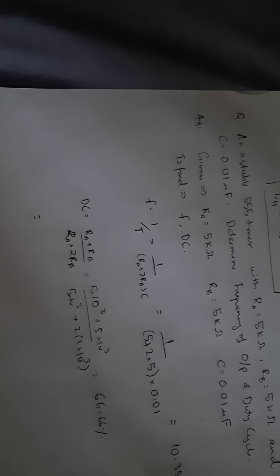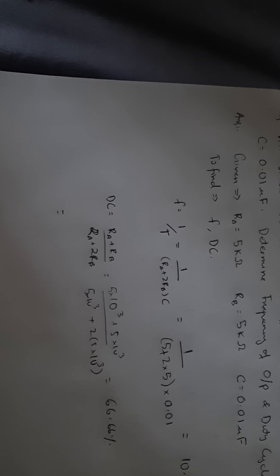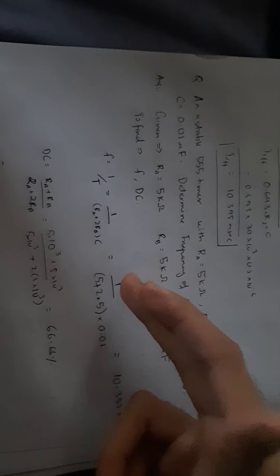In some questions they give duty cycle as 75 percent, so we write T_on by T = 75% = 3/4 and calculate from there. If Ra or Rb is not given, take either as 10 kΩ as default and find the general equation. But those questions are not asked much — most questions are of the type we just solved.